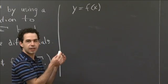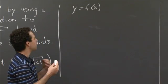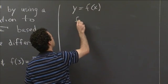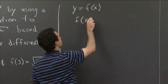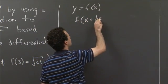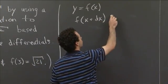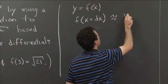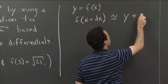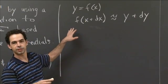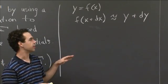then if we want to change x a little bit and figure out what the change in y is, we have this formula: f(x + dx), the function value at a nearby point, is approximately equal to y + dy. This is our formula for linear approximation in terms of differentials.